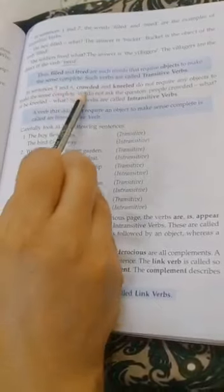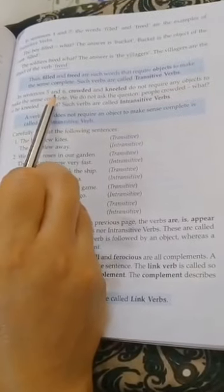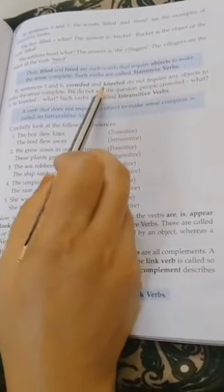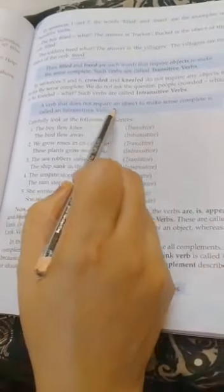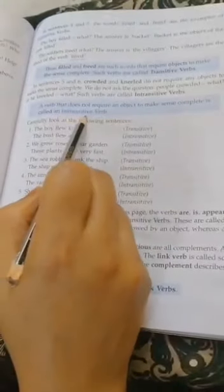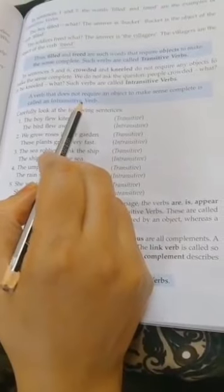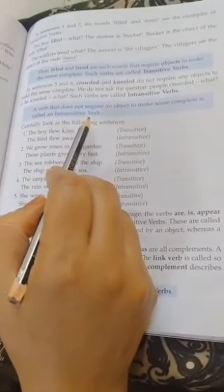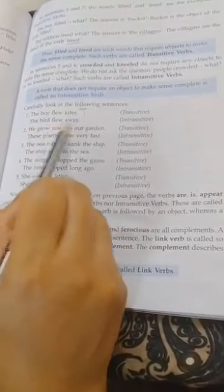In sentences five and six, 'crowded' and 'knelt' do not require any object to make complete sense. We do not ask 'people crowded what' or 'he knelt what'. Such verbs are called intransitive verbs. A verb that does not require an object to make complete sense is called an intransitive verb.